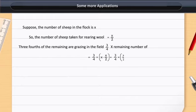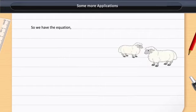Apart from this, nine sheep are drinking water. Remember that the total number of sheep is only X. So, we have the equation: X by 2 plus 3X by 8 plus 9 is equal to X. On solving,